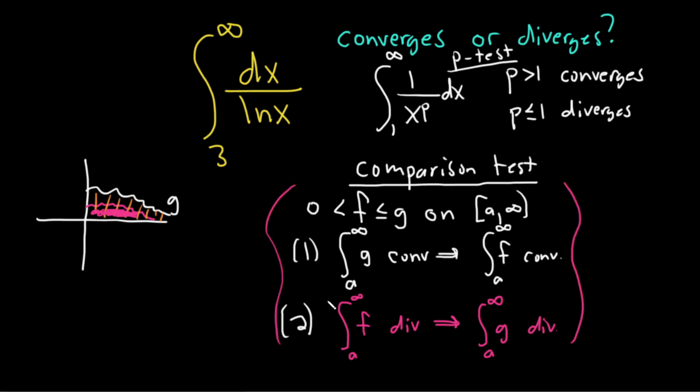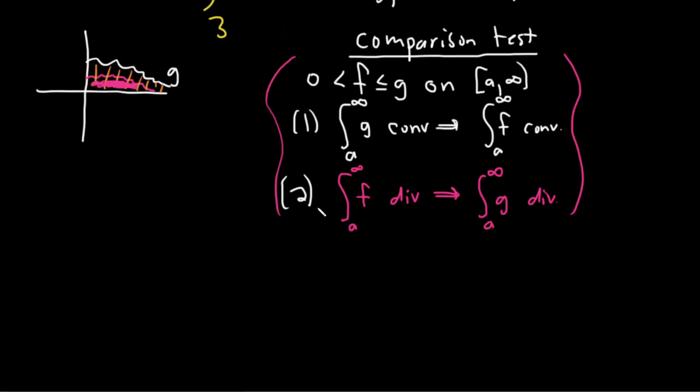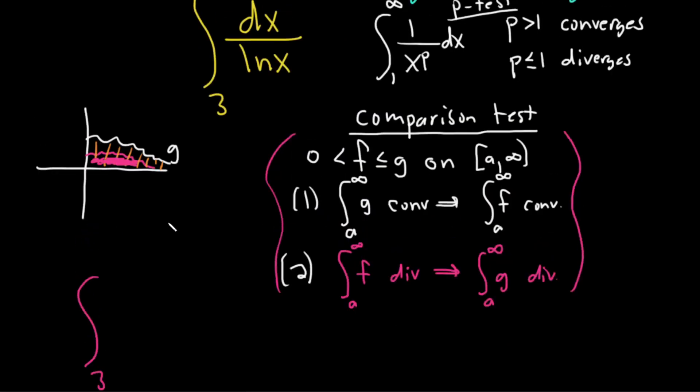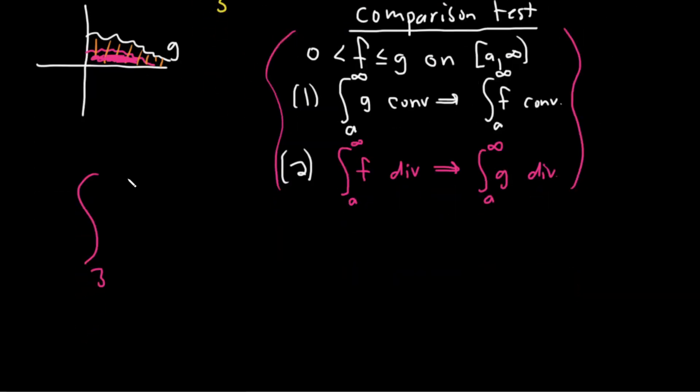So let's go ahead and see if we can figure this problem out. So here we have the improper integral from 3 to infinity dx over ln x. And I haven't done this problem yet. So I just thought I would try it and see how it goes. So we need to compare it to something.